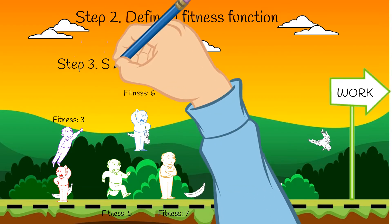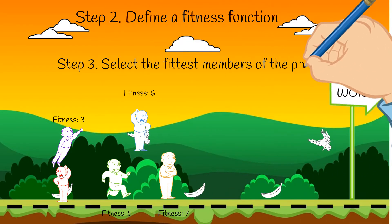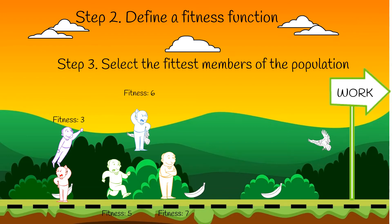Step three: select the fittest members of the population. Since our population size is very small, we'll only take the top two Jonathans. But you could choose to select more if your population was larger.